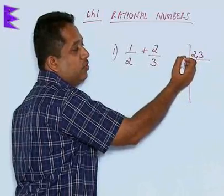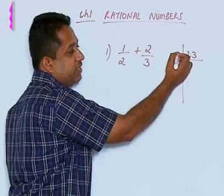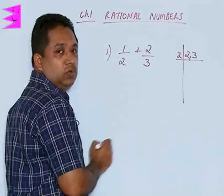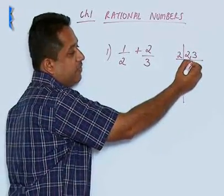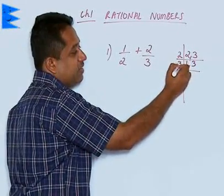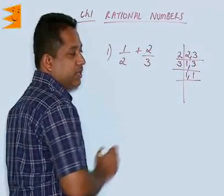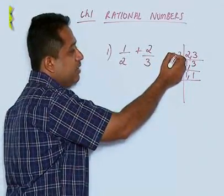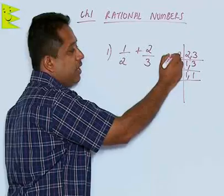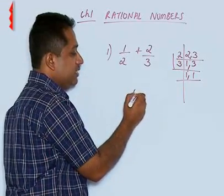We are going to find these factors. We take the lowest prime number that is 2. 2 goes once and 3 remains as it is, then again 3, this is 1 and 1. The process is repeated till we get 1. We find the factors are 2 and 3. We multiply 2 and 3, we get 6. So, LCM is 6.